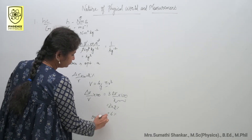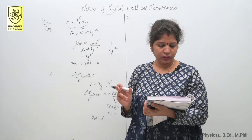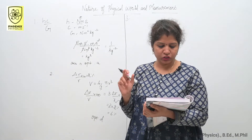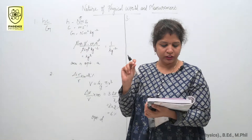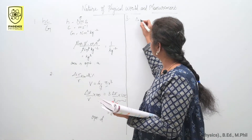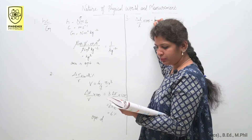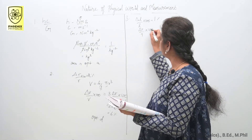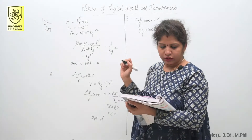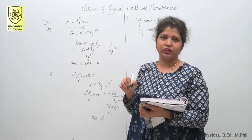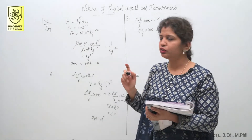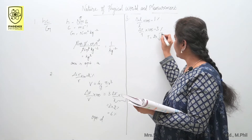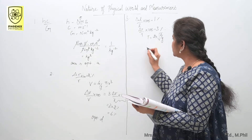Third question: if the length and time period of an oscillating pendulum have errors of 1% and 3% respectively, the error in the measurement of acceleration due to gravity is asked. Delta l by l into 100 equals 1%, and delta t by t into 100 equals 3%. You know the formula t equals 2π root(l/g).